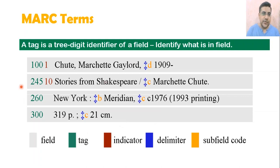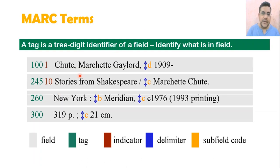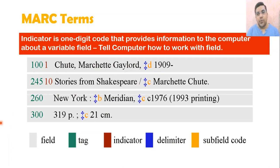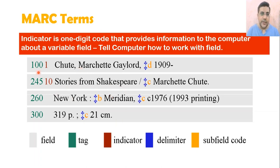Then we have indicators. You can see two indicators here — indicator one and indicator two. Normally in MARC 21 records, we find indicators as backslashes or digits. The indicator is a one-digit code that provides information to the computer about the variable field — it tells the computer how to work with that field. You will see double backslashes in MARC 21 records.